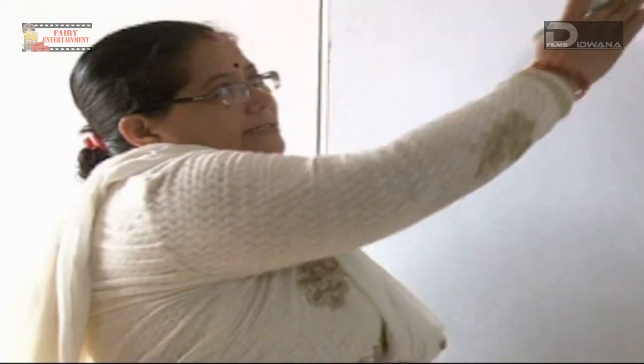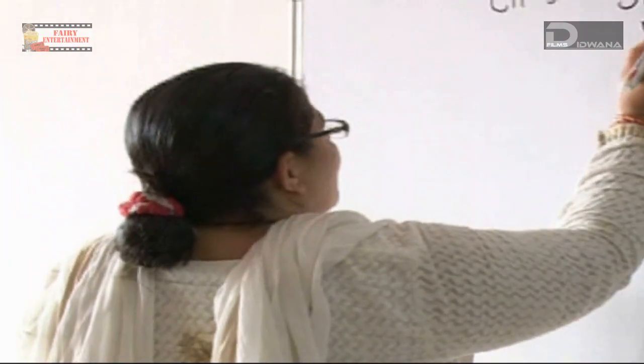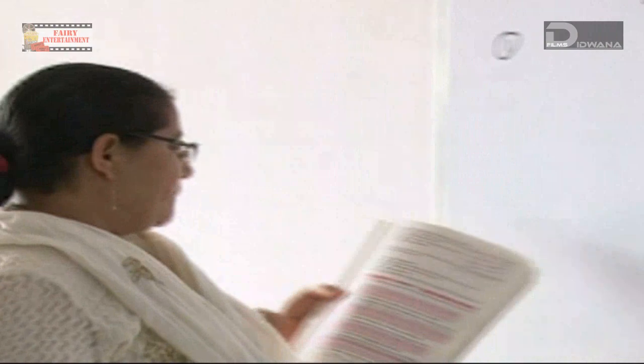We start with Chapter 5: Statistics, Exercise 5.1, Question 1. The question gives us the distribution of money in rupees collected by students for a flood relief fund.